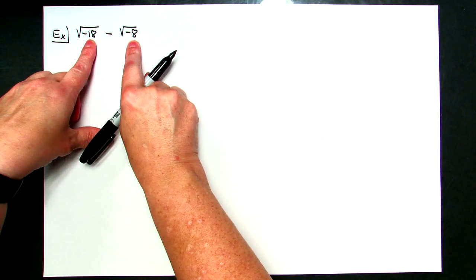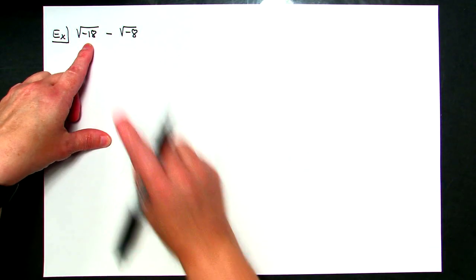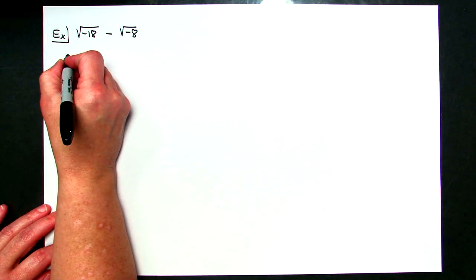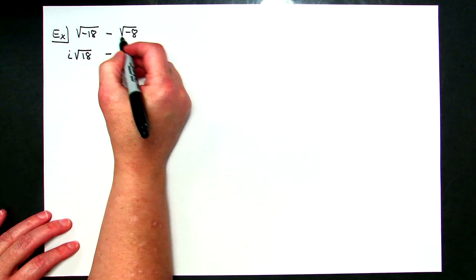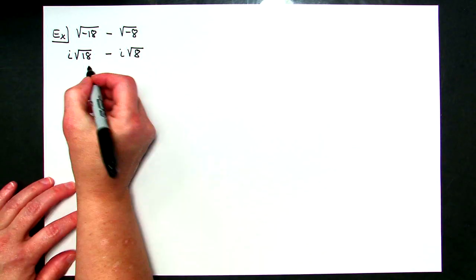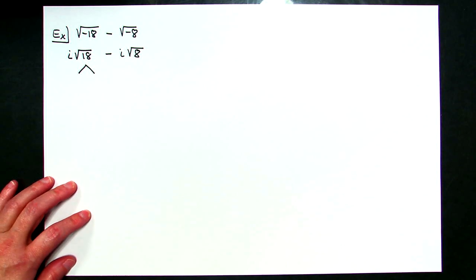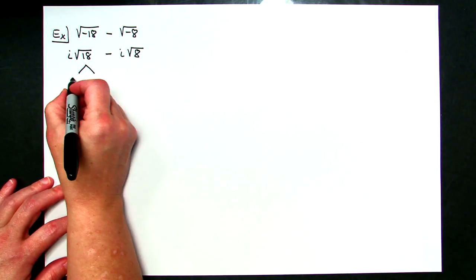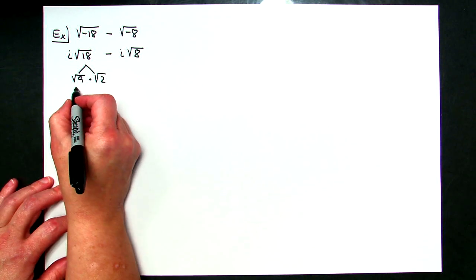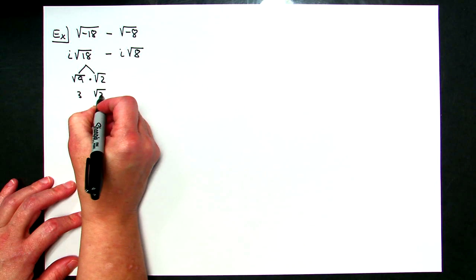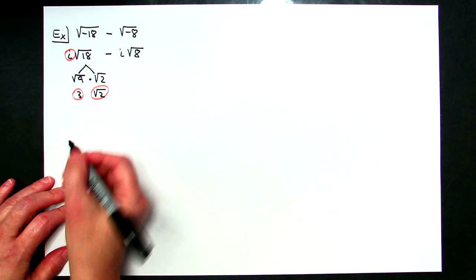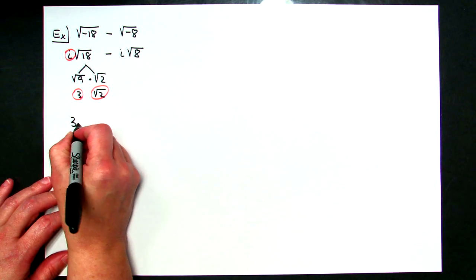Whenever you add or subtract radicals, they have to be like radicals, and right now they are not. So first, I'm going to pull out the square root of negative 1 from each term. That gives me i√18 minus i√8. Now I'll focus on simplifying √18: the biggest perfect square root I can use is √9, since 9 times 2 is 18. √9 is 3, so √18 simplifies to 3√2. Combined with the i, this term becomes 3i√2.